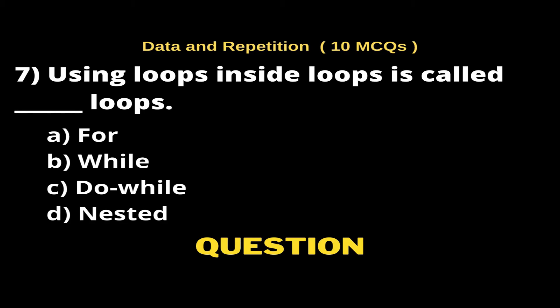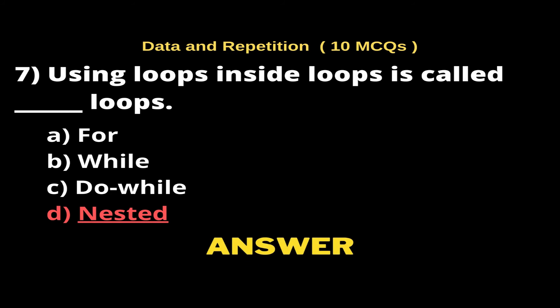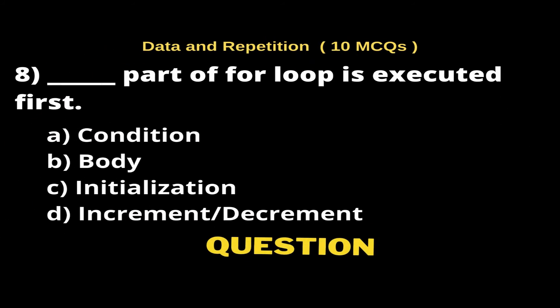Question 7: Using loops inside loops is called ___ loops. Options: A) For, B) While, C) Do-while, D) Nested. The right answer is Option D, Nested.